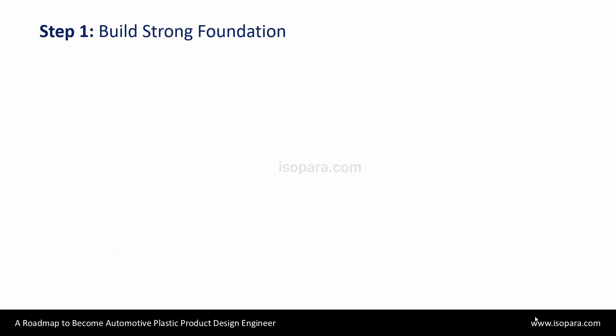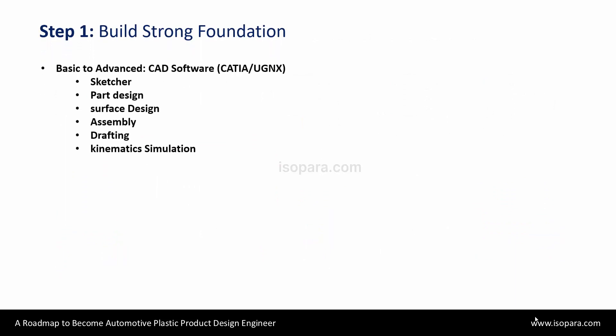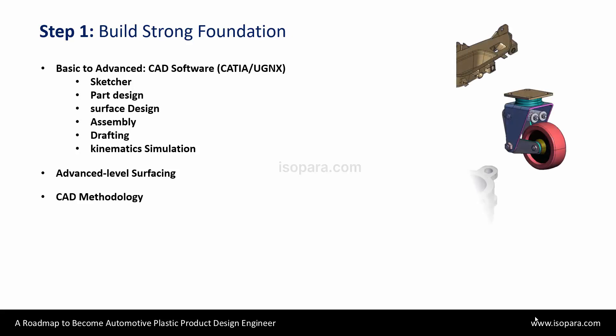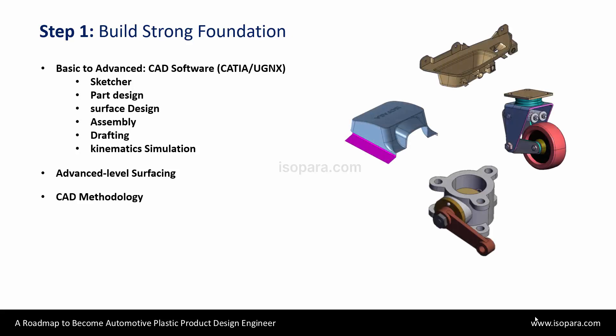Let's take step one. You have to act on CAD software. Mostly CATIA or Unigraphics is used in the automotive industry as both are good at surfacing. Here you will get to know in detail the various workbenches present in both software which are highly recommended to be learned: sketcher, part design, surface design, assembly, drafting, kinematic simulation, etc. You should be able to go through all these workbenches while doing the industry level assignments. Also, you have to learn an advanced level of surfacing and CAD methodology.